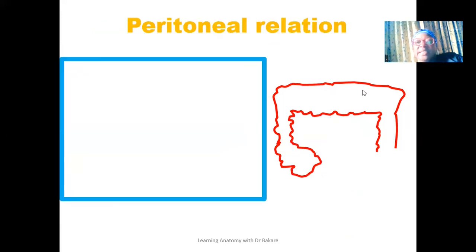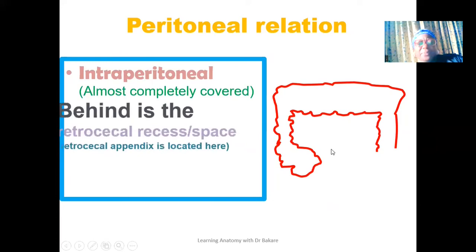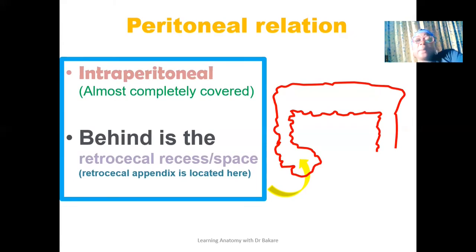Let's look at peritoneal relations. The cecum is an intraperitoneal organ, which means it is almost completely covered by peritoneum, although it does not present a distinct formation of mesentery. Looking at the posterior part of the cecum, there is a space or recess called the retrocecal recess. This tends to create an accommodation site for a retrocecal appendix, since the appendix can take different kinds of positions, and when it takes a retrocecal position, it will be located within this retrocecal recess.